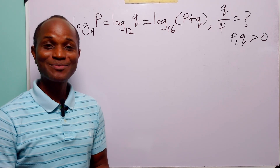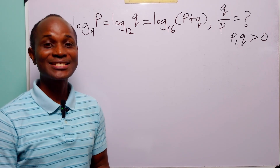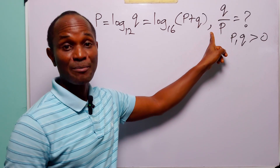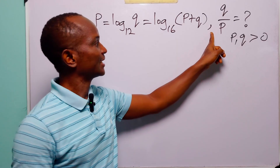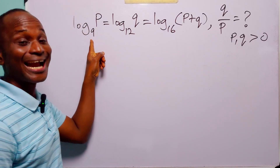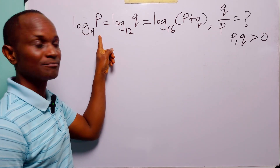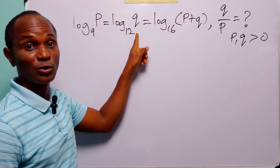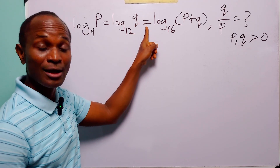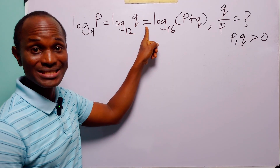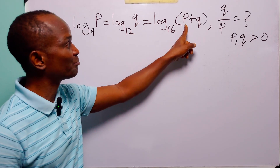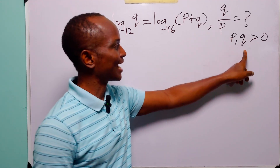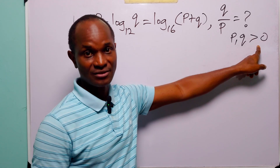Hello and welcome. In this math tutorial, our task is to find the value of Q over P, given that log to base 9 of P is equal to log to base 12 of Q, which in turn is equal to log to base 16 of P plus Q, and P and Q are both positive.